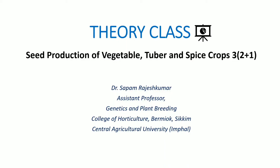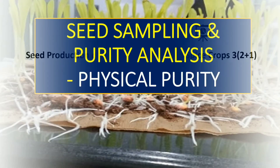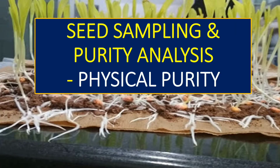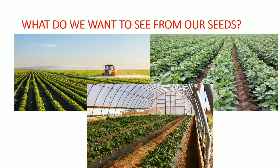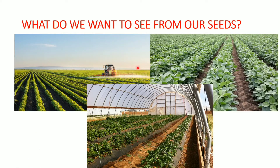Hello students, welcome to the theory class of seed production of vegetable, tuber and spices crops. Today's topic is on seed sampling and purity analysis. When a farmer buys seeds from the market, this is something they would like to expect in their field plot when they sow the seeds: uniform growth and development, uniform vigor.